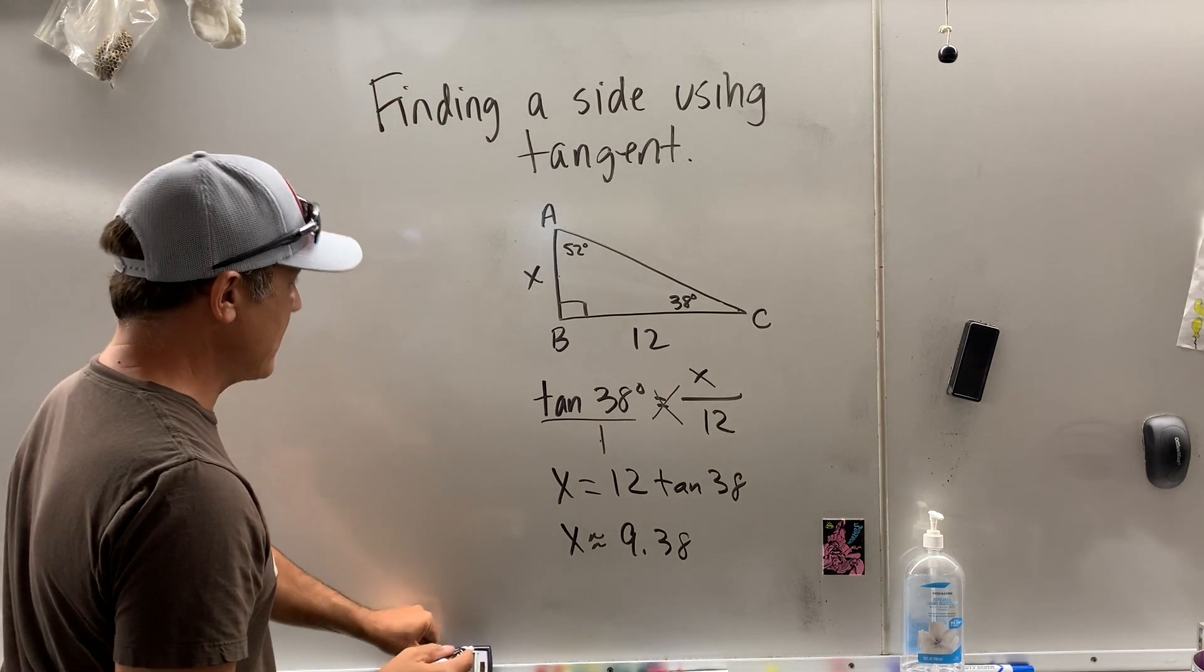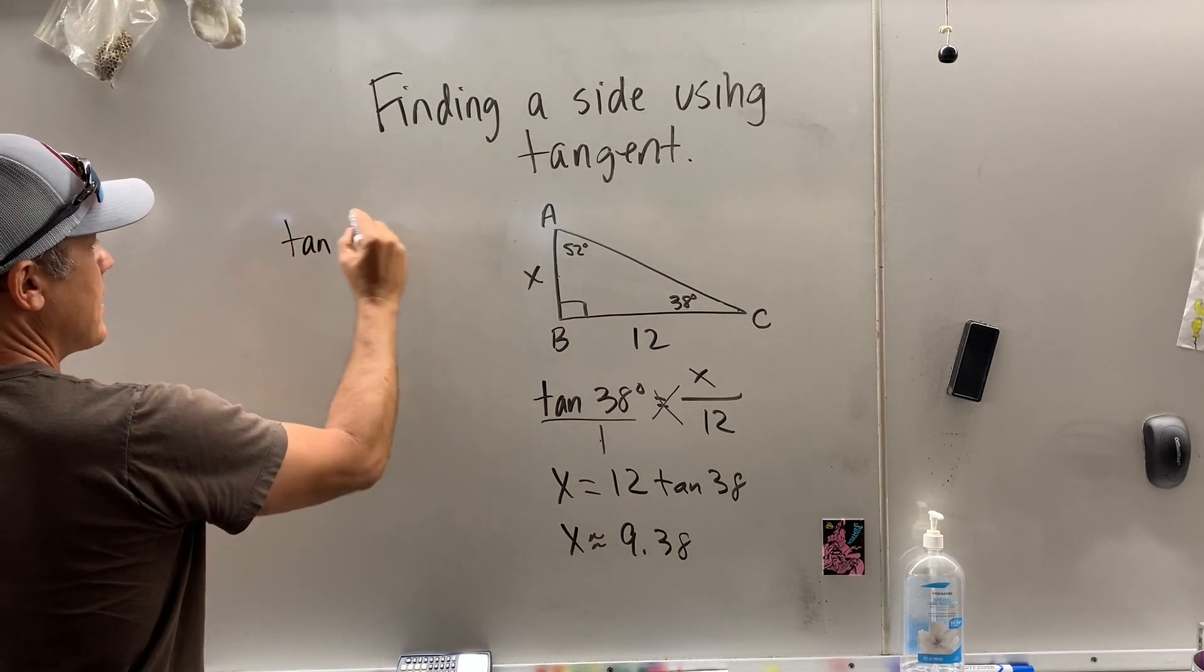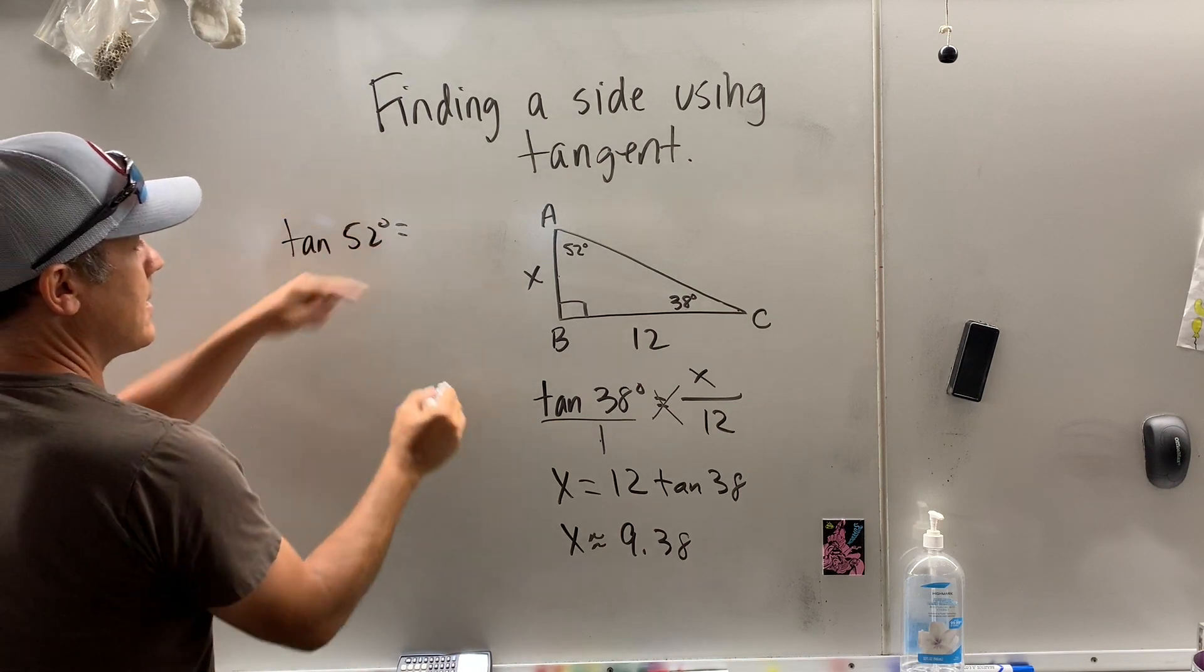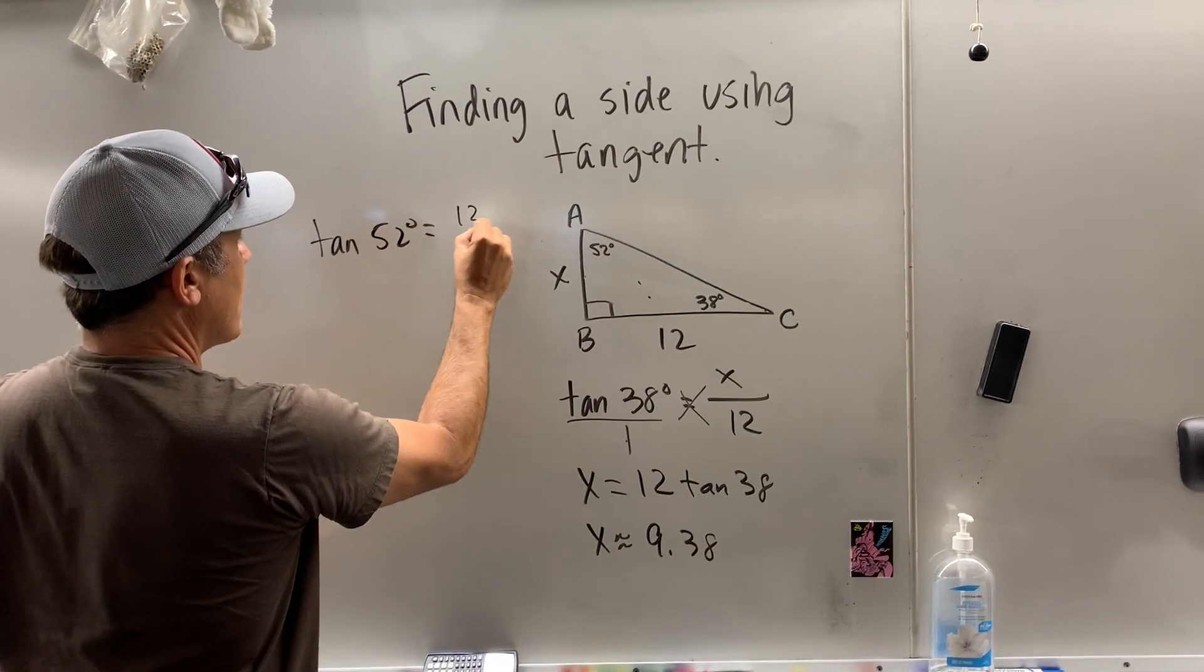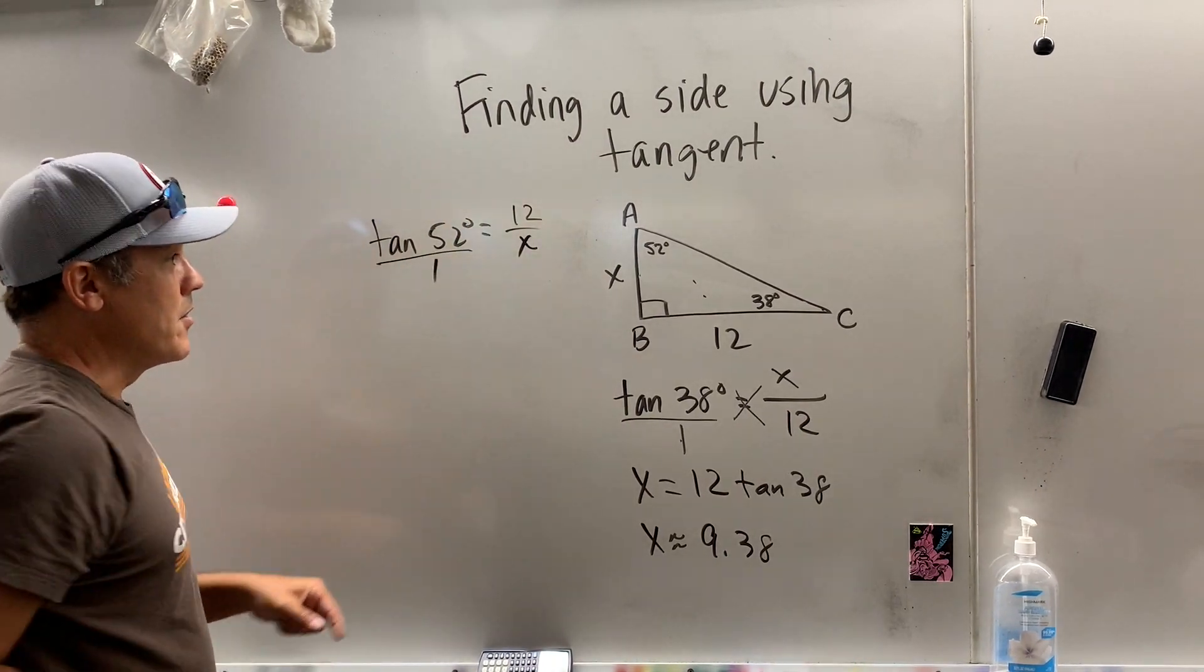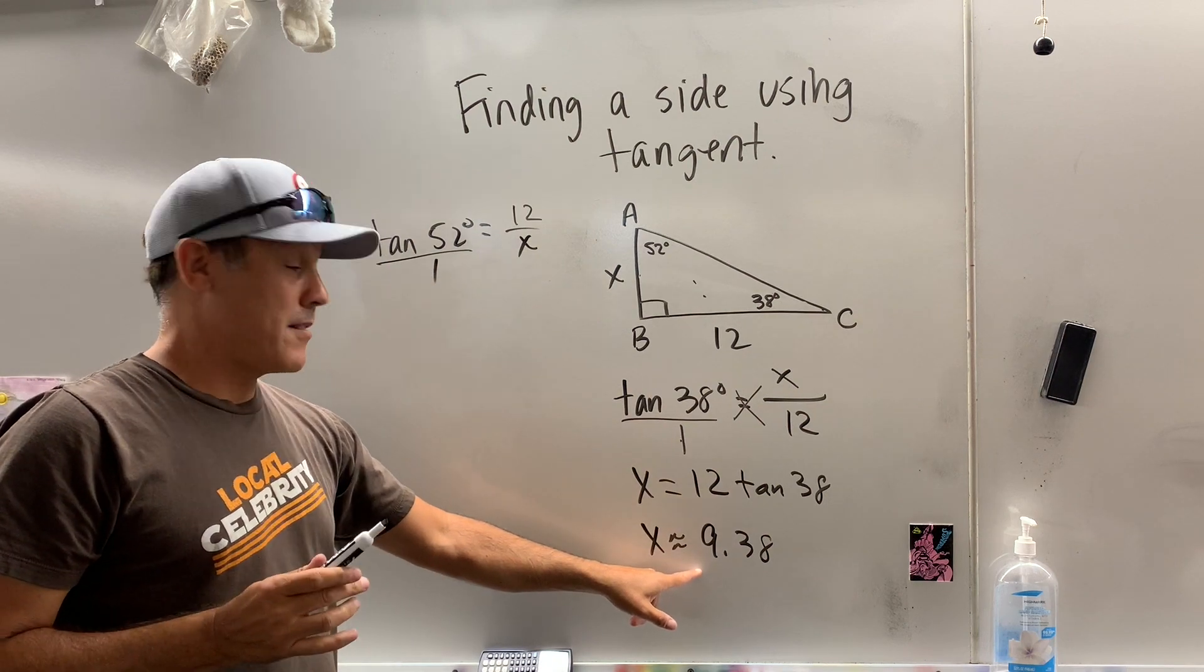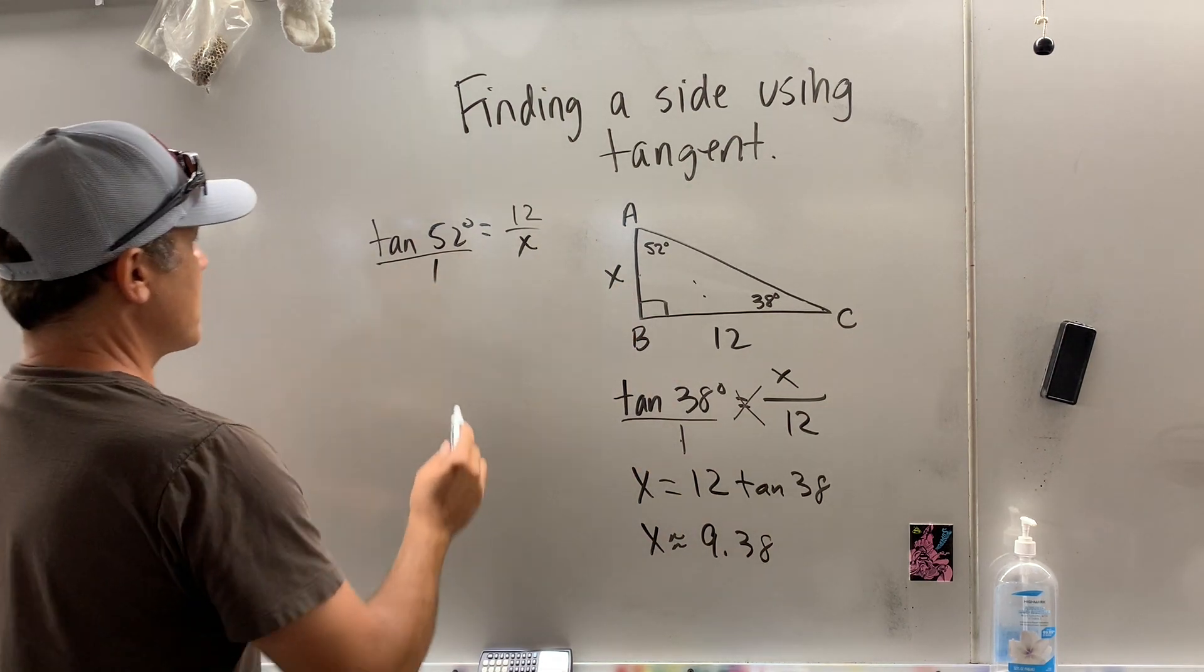If my finger now is here, I can find the tangent of this angle, which is 52 degrees, is equal to opposite over adjacent. Now, do you think this x better be 9.38? It better be. X has not changed. So let's see if this is true.